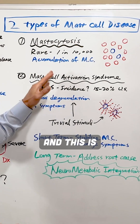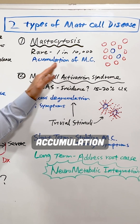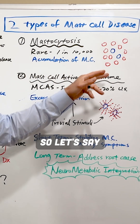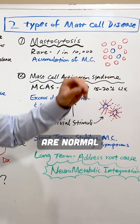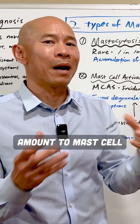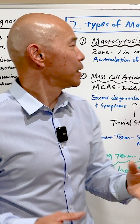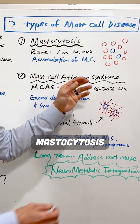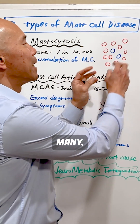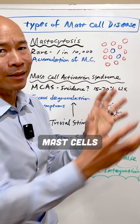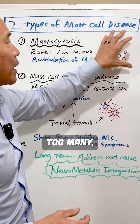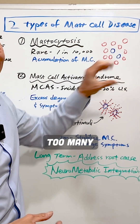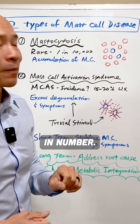Mastocytosis is an accumulation of mast cells. So let's say these blue circles are a normal amount of mast cells. In mastocytosis, you will have many, many more mast cells that are produced — too many in number.